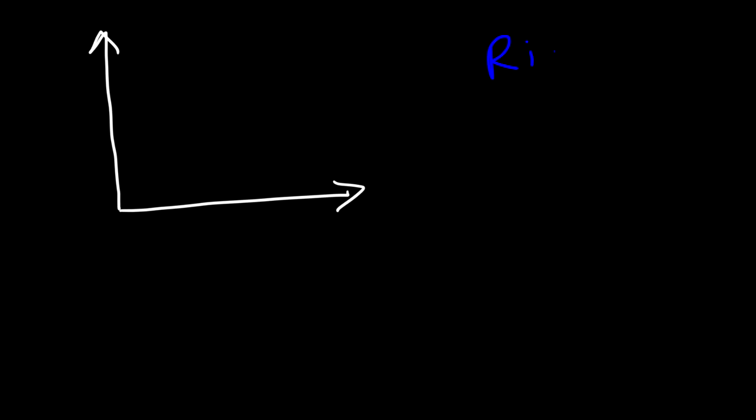The next angle we need to talk about is the right angle. A right angle has an angle of exactly 90 degrees. Typically you'll see a box right next to the vertex, so x is exactly 90.